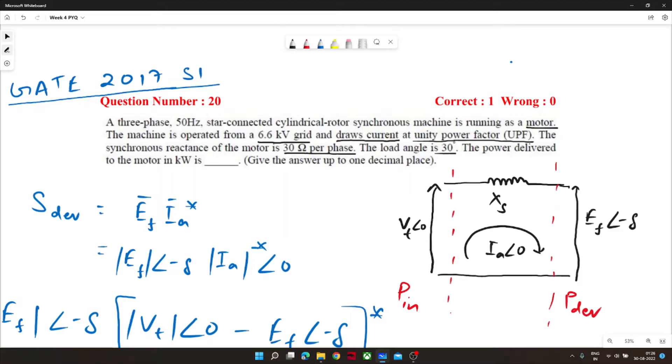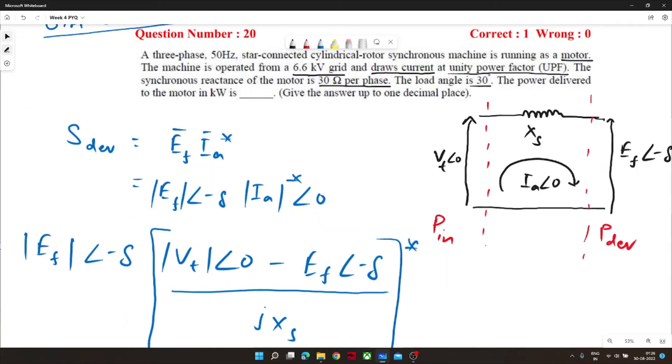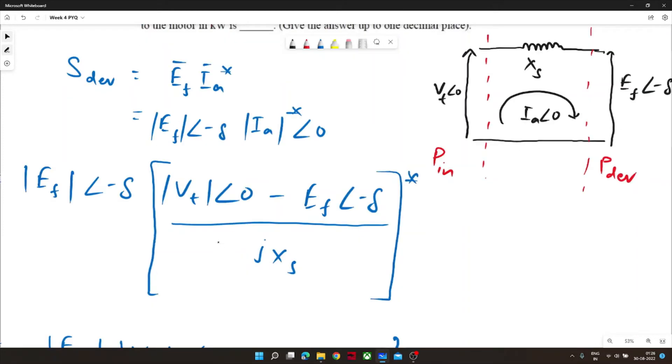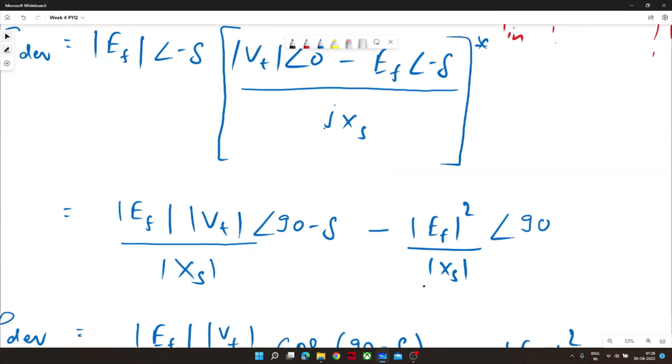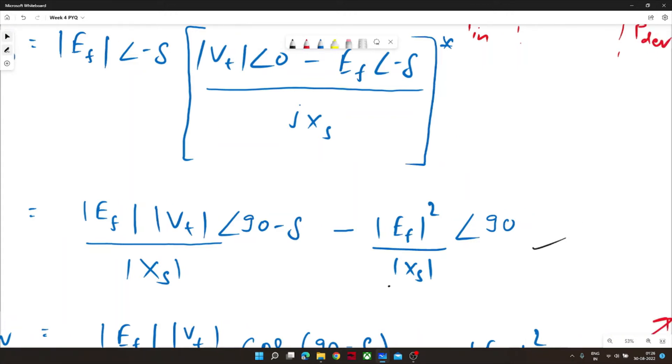So its E_f angle would lag from the supply voltage so that power can flow from the source to load or source to the motor. Now E_f angle minus delta multiplied with I_a conjugate and I_a is nothing but V_t angle 0 minus E_f angle minus delta divided by jX_s. It is nothing but the KVL.